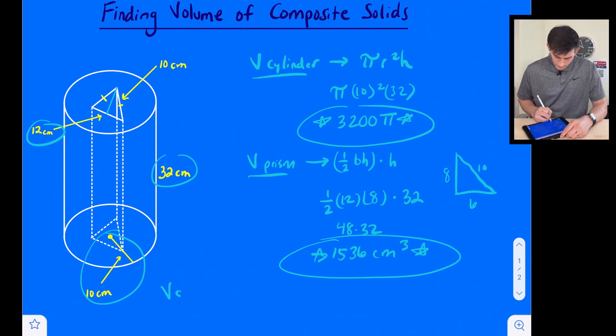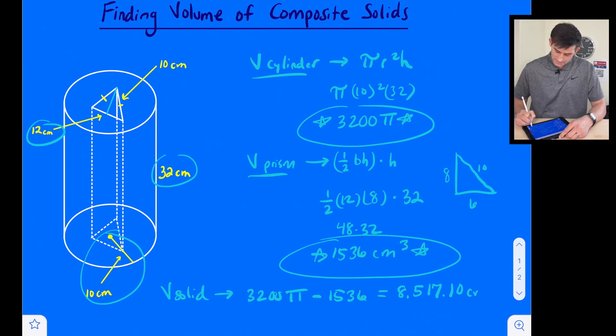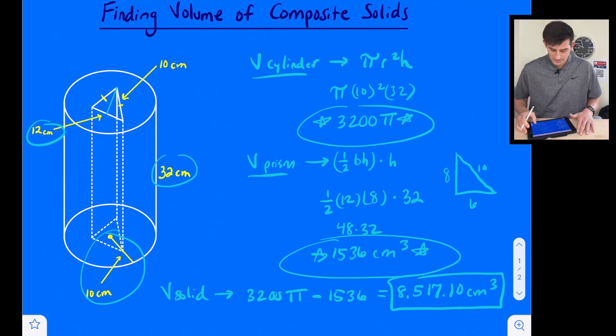To find the volume of the solid, we are going to take 3200π and subtract 1536. So 3200π minus 1536, and that's going to give us 8517.10, and this is cubic centimeters. So that'd be the volume for that composite solid.